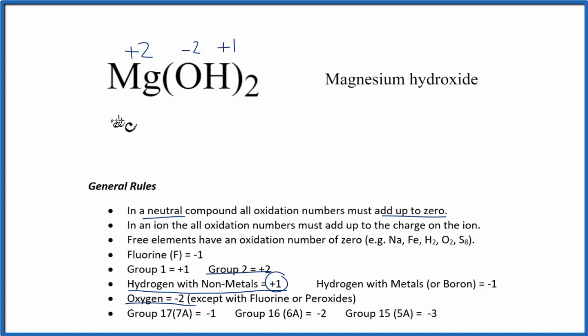We have plus two for the magnesium. Plus, let's write it like we have our formula here: minus two for the oxygen, plus one for the hydrogen. And we have two of these hydroxides, so we'll put a two out here. All of that should equal zero.